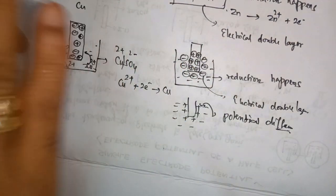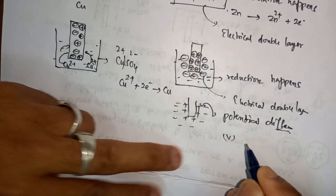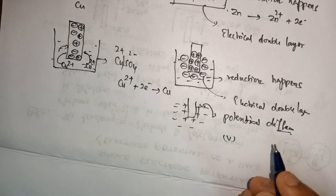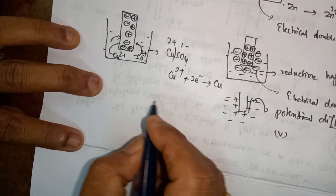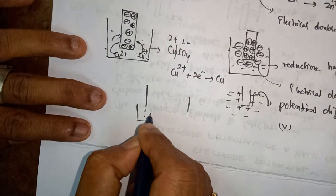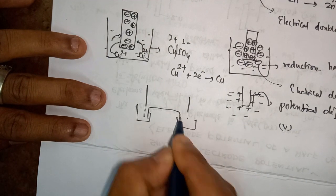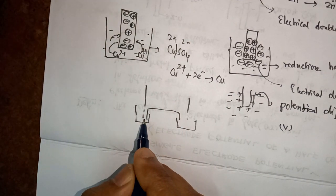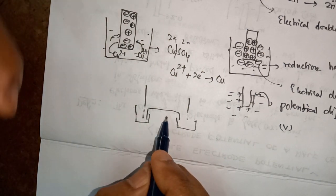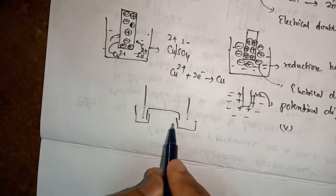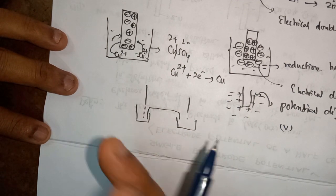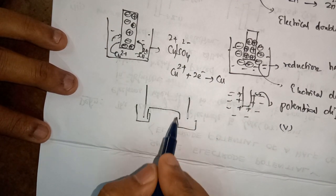The potential difference is represented by the SI unit volt. The single electrode potential cannot be calculated directly, but it can be made into a complete electrochemical cell by connecting with a reference electrode. The two half cells are connected through a salt bridge, which allows ions to exchange between the two solutions without mixing the liquids, thereby maintaining neutrality, which gives a continuous flow of current.